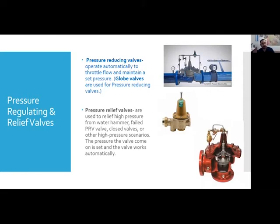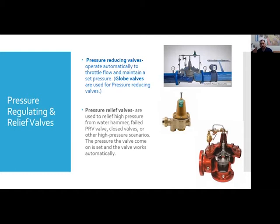Pressure reducing valves operate automatically to throttle flow and maintain a set pressure — globe valves are used for pressure reducing valves. Pressure relief valves relieve high pressure from water hammer, failed PRV valves, closed valves, or other high-pressure scenarios. They come on at a set pressure automatically. You'll often see pressure relief valves in the same area as the pressure reducing valve — they are your fail safe. If your PRV fails, the relief valve kicks on at that set pressure to protect your system. Pressure reducing valves also come in small sizes on customer service lines to protect appliances.